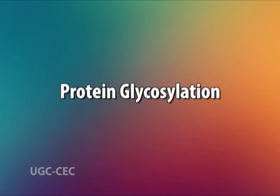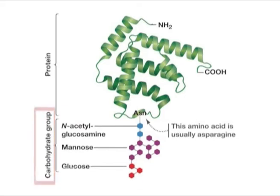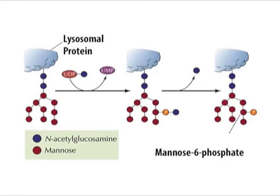Protein glycosylation: protein processing within the Golgi involves modification and synthesis of the carbohydrate portions of glycoproteins. One major aspect is the modification of N-linked oligosaccharides that are added to proteins in the ER. Proteins are modified within the ER by addition of an oligosaccharide consisting of 14 sugar residues. Three glucose residues and one mannose are removed while the polypeptides are still in the ER.